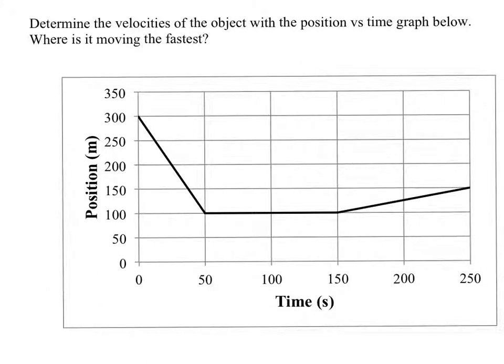All right, so here we have another position versus time graph, and we're trying to find the velocities of the object. Anytime the line changes slope, the object changes velocity. So we have three regions where the velocity is different.